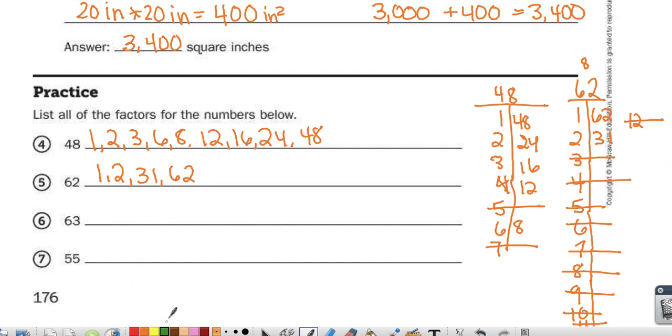Factors of 63. 1 and 63. 2 is not a factor because 63 is odd. 3 times 21. 4 is not a factor because 2 is not a factor. 5 is not a factor because it doesn't end in 0 or 5. 6 is not a factor because 2 and 3 aren't factors. 7 times 9.